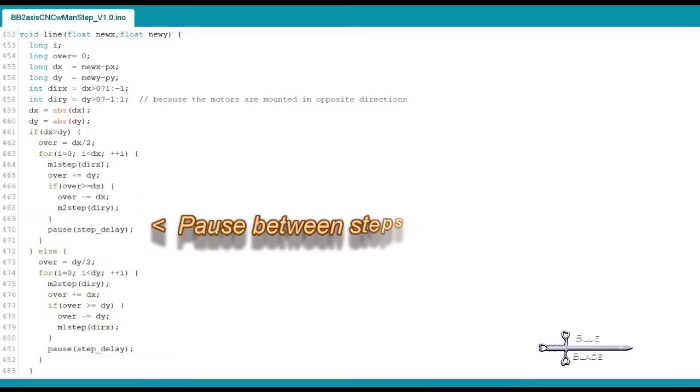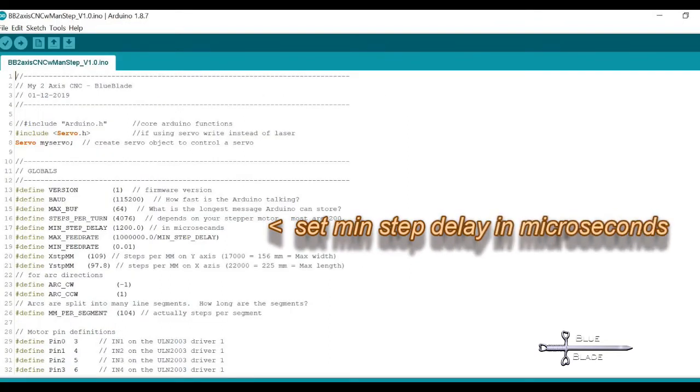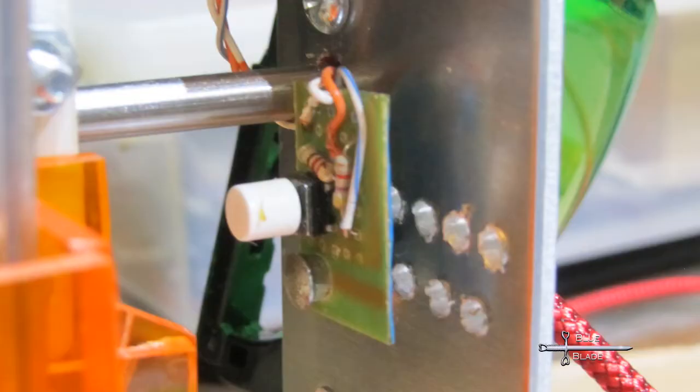The line function also adds a pause between steps based on the feed rate, as calculated in microseconds by the feed rate function. Make sure to adjust min-step delay to the smallest delay your motor works with.